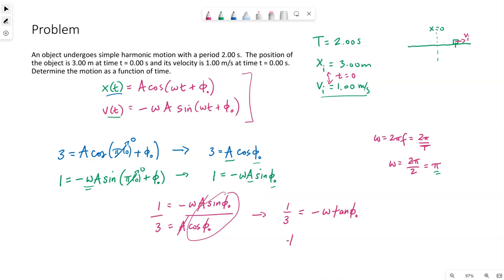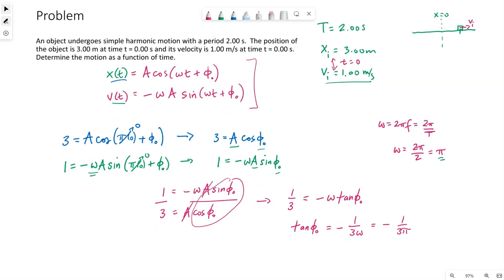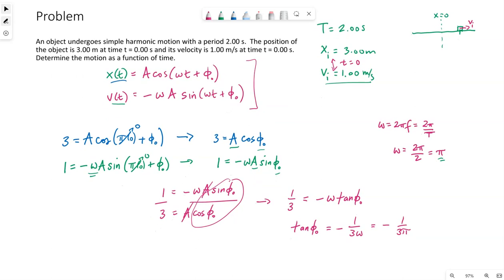I know omega, let's go ahead and solve for tangent of phi naught, will be negative one over three omega. And since we know omega is pi, I can take the inverse tangent of negative one over three pi.